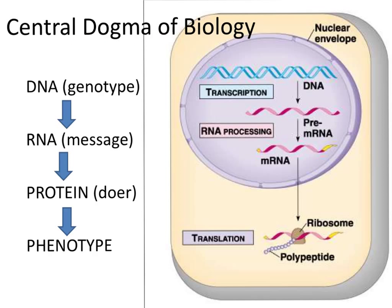So just as a reminder, we start off with our genotype in the form of DNA hidden inside the nucleus of our cells, which our cells then transcribe into an RNA message, which you can see right here. The RNA message can then leave the nuclear envelope, go out into the cytoplasm, where ribosomes will turn it into a protein — which is the doer molecule. As those proteins do particular things in our bodies, that causes us to have a particular phenotype.